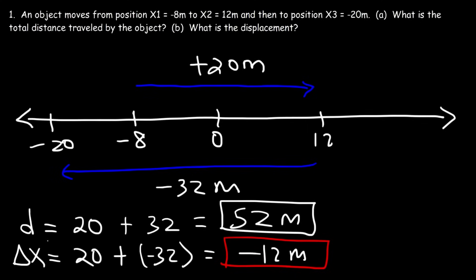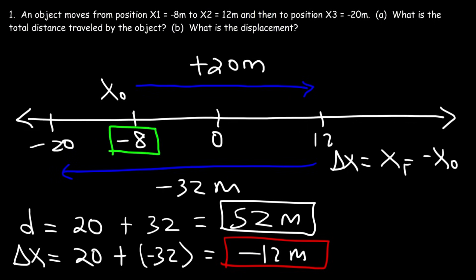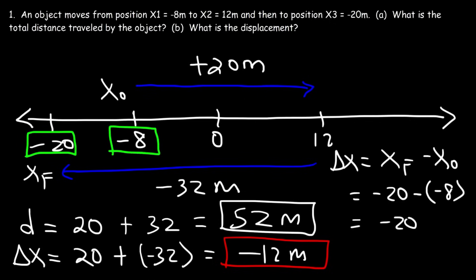You can also find the displacement using the overall formula: the initial position for the entire trip starts at negative 8, and the final position ends at negative 20. So it's negative 20 minus negative 8, which equals negative 20 plus 8, giving negative 12. There are many different ways to calculate the net displacement of the object.